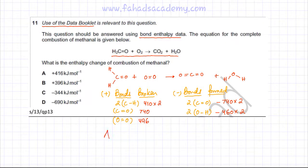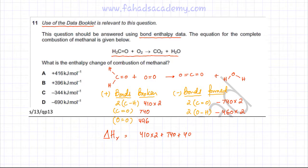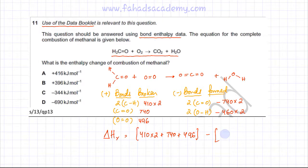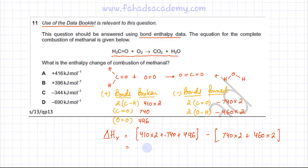The last step is to sum everything up. Bonds broken: (410 × 2) + 740 + 496. The reason we write a minus sign before bonds formed is that bond formation is exothermic: minus [(740 × 2) + (460 × 2)]. Using a calculator, the answer is −344 kJ/mol. This is the final answer, which corresponds to option C — the enthalpy change for this reaction.